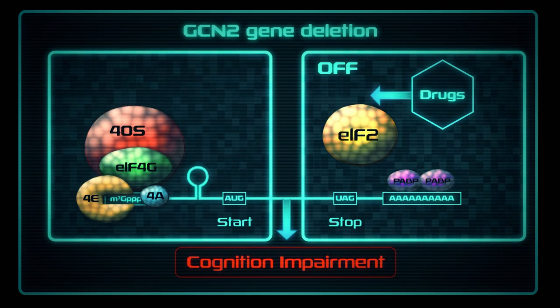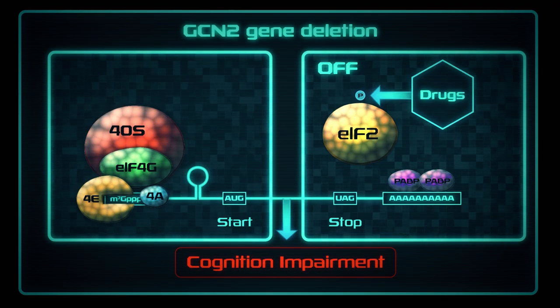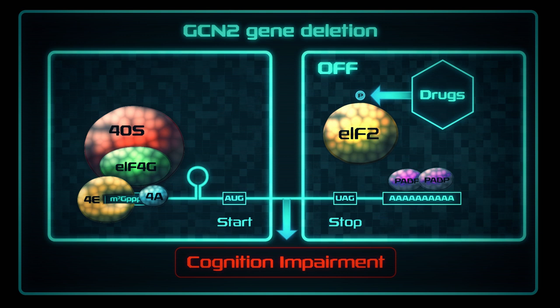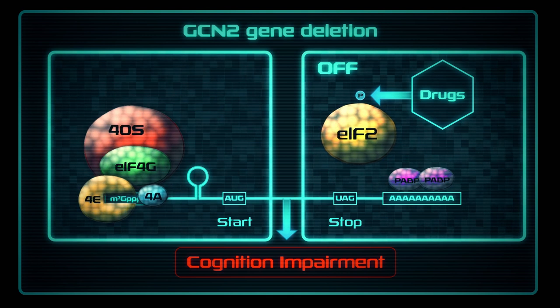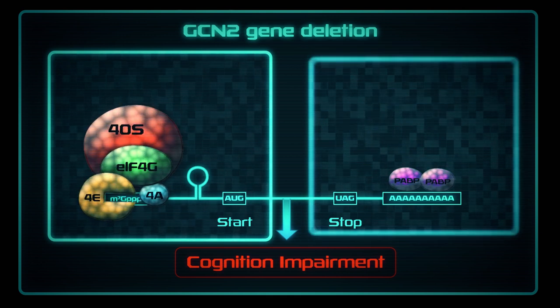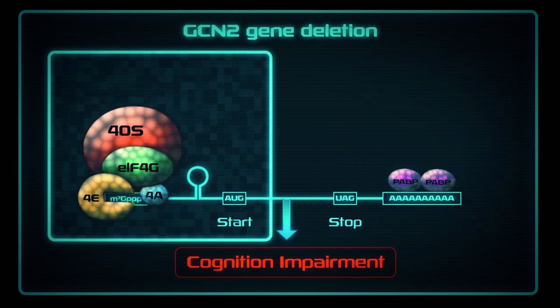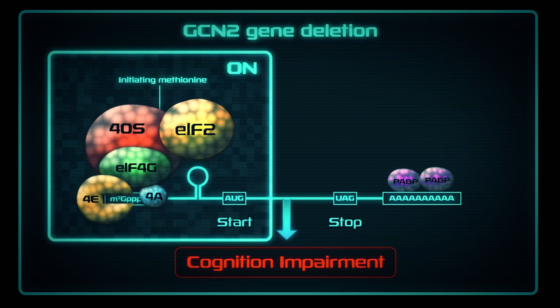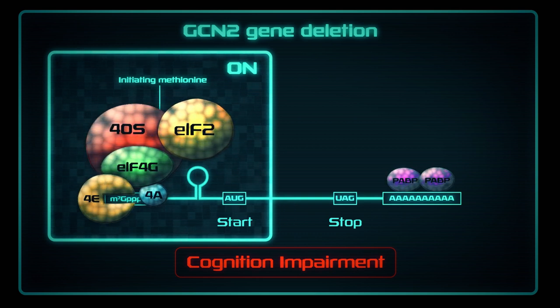Strikingly, mice with reduced EIF2 phosphorylation demonstrated enhanced synaptic plasticity, spatial learning, memory, and fear conditioning.